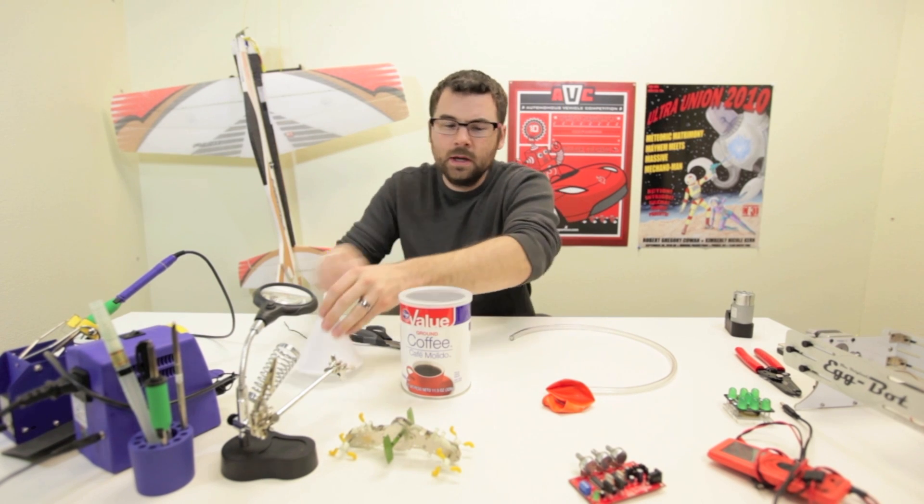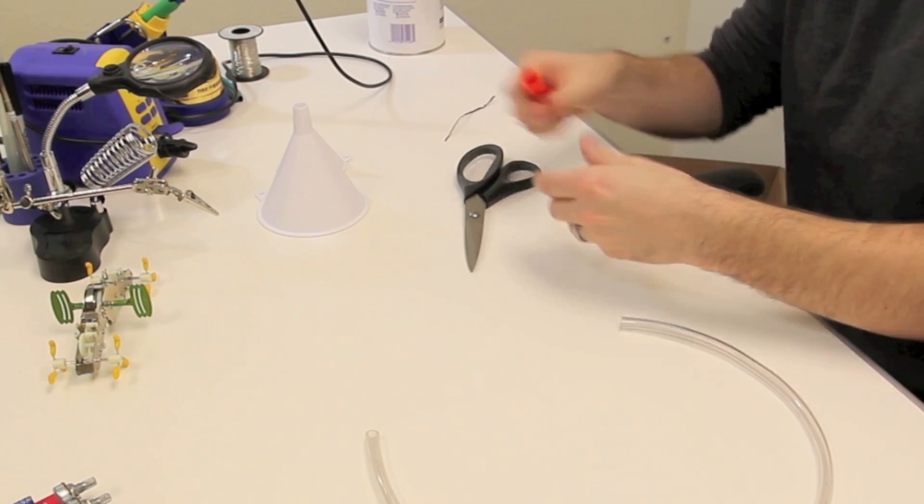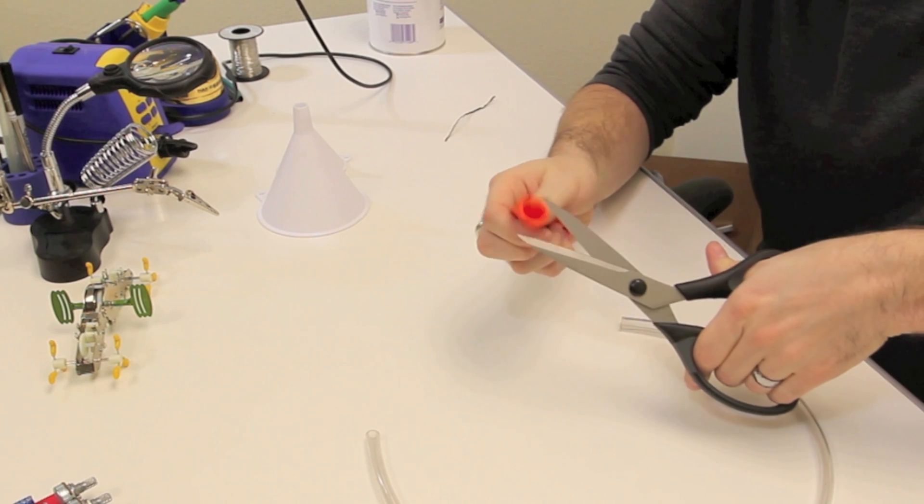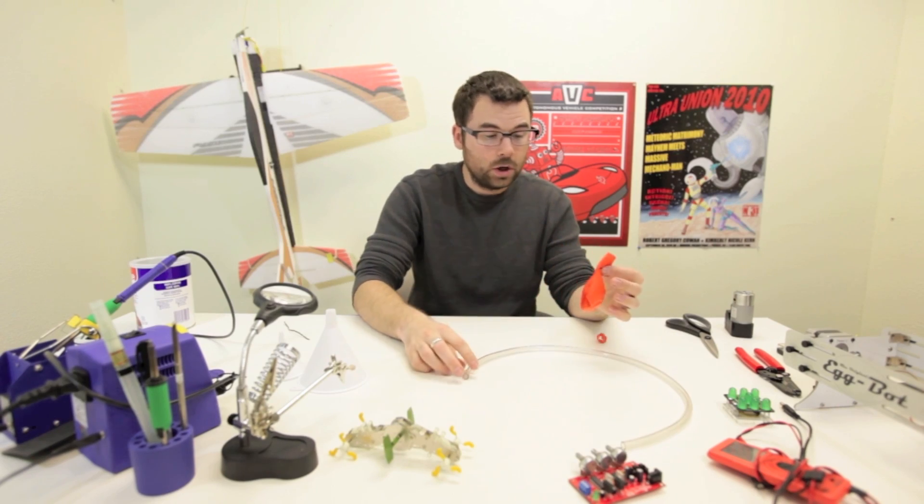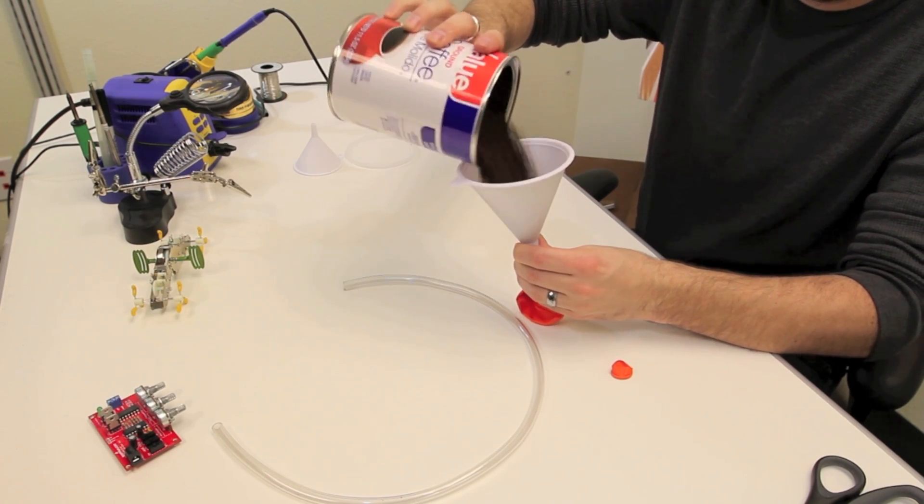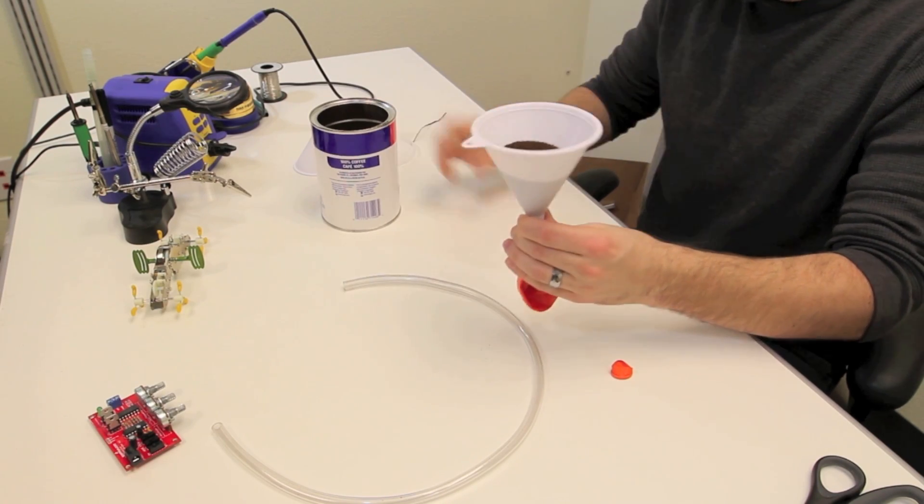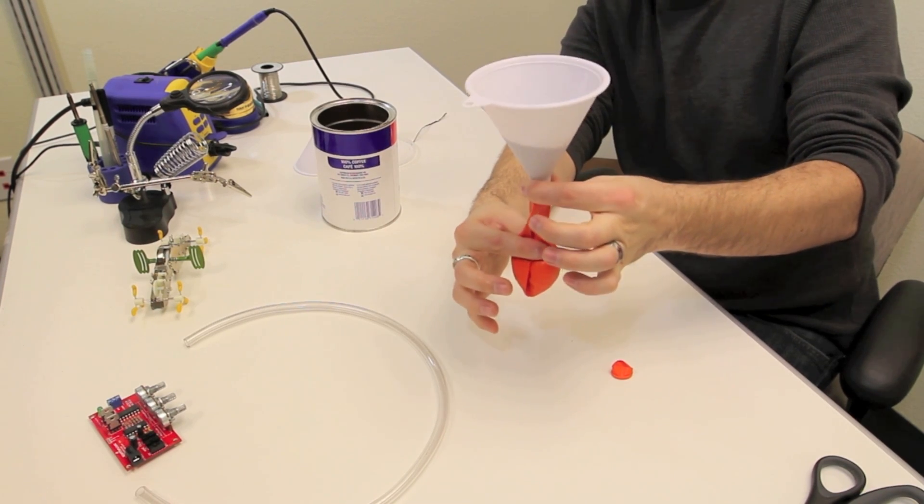So what we're going to do is first we're going to get the balloon ready and we want to cut off this top rib on the top. There we go. And we're going to fill this up with coffee grounds using this bigger funnel. So we're just going to pour some in. And we want this to be about filled up to here.